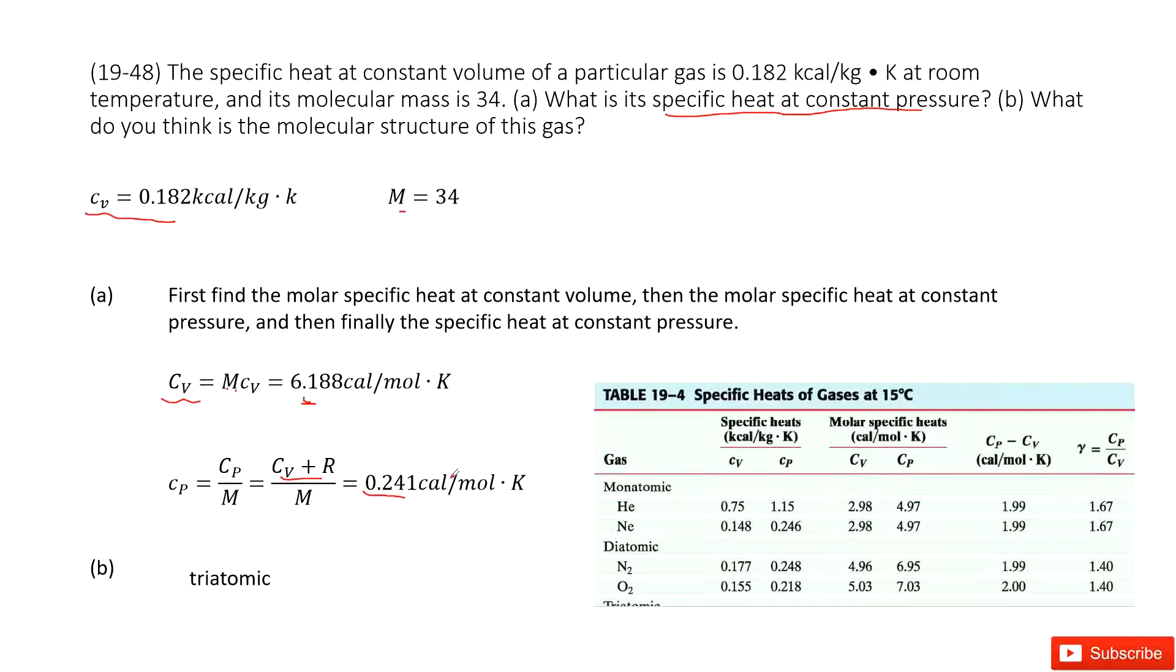Next question asks you, what is the molecular structure for this gas? So C_v is 6.188 and c_p is 0.241. You can check the table 19-4. We can get it as a triatomic.